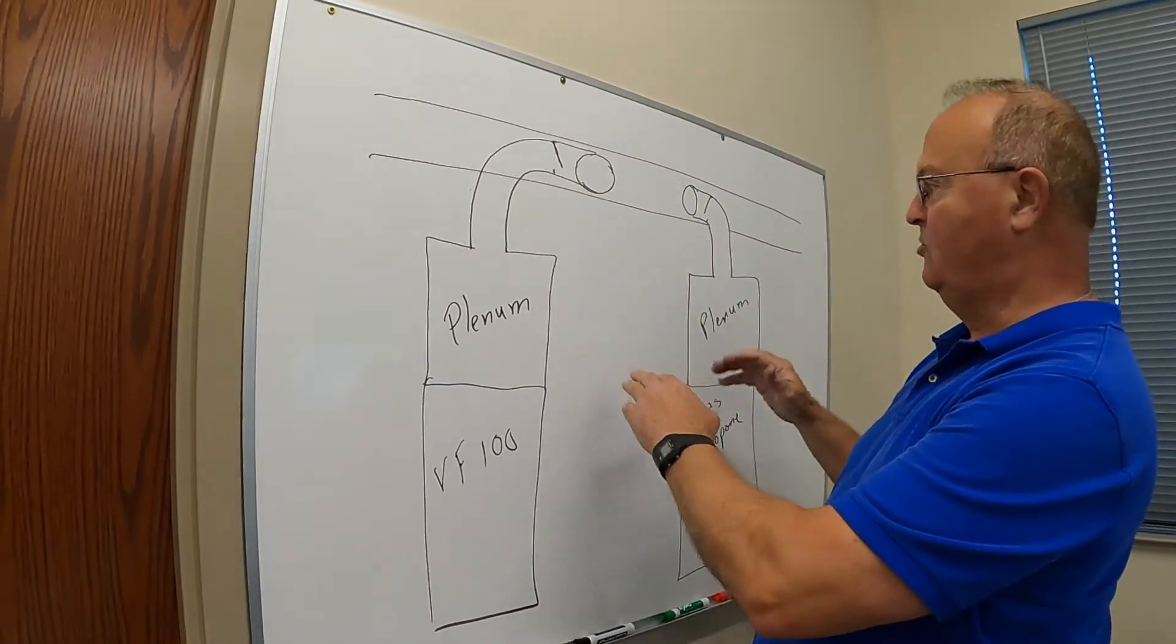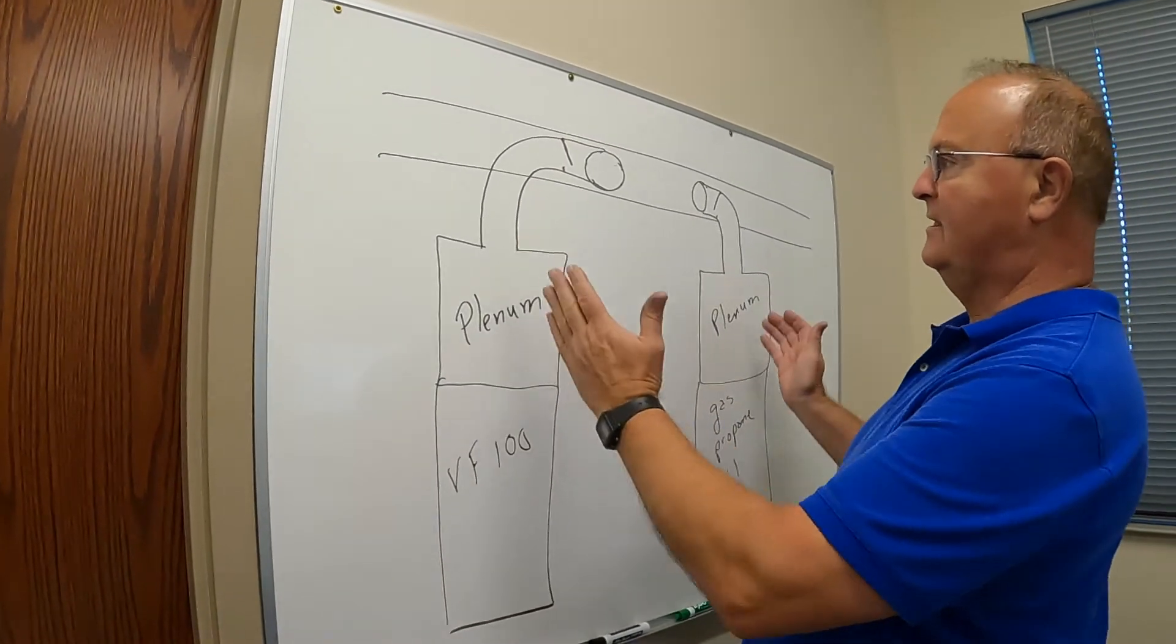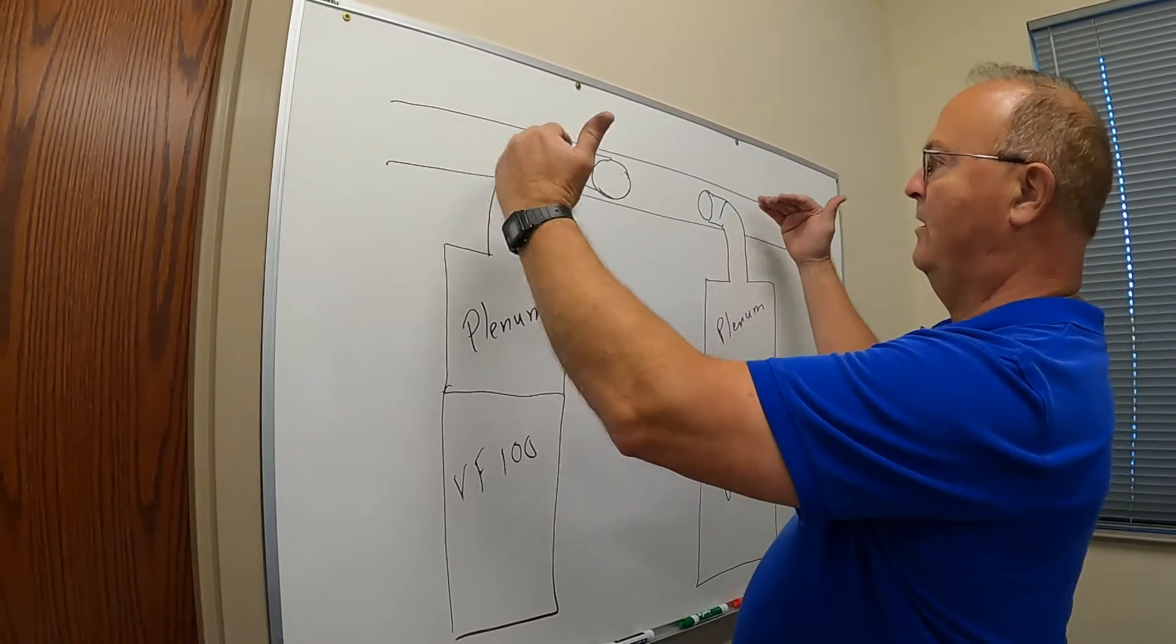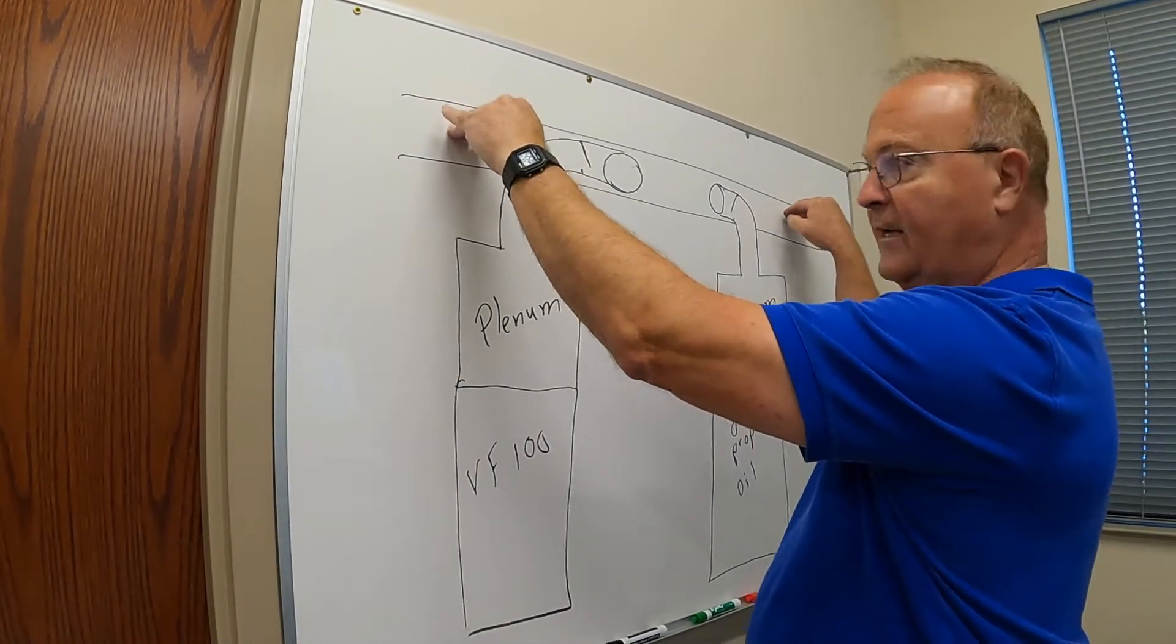Now I'm only showing one duct, but you could have multiple ducts if you want. It's easiest if you can run your pipes horizontally into the warm air trunk line.